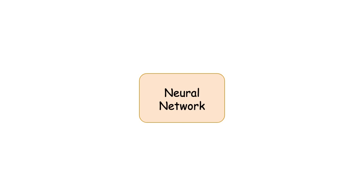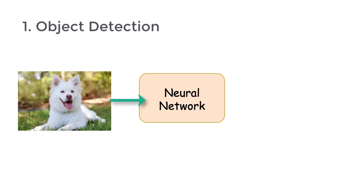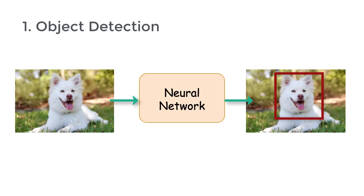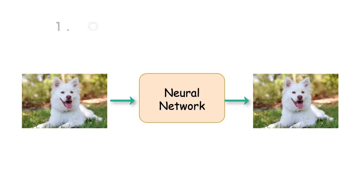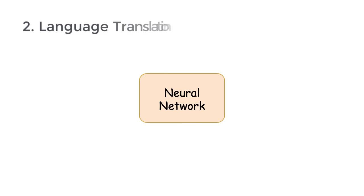Over the last decade, deep learning has taken the field of AI by storm. Using neural networks, we can now solve a host of problems. To name a few, one problem that we can solve is object detection.